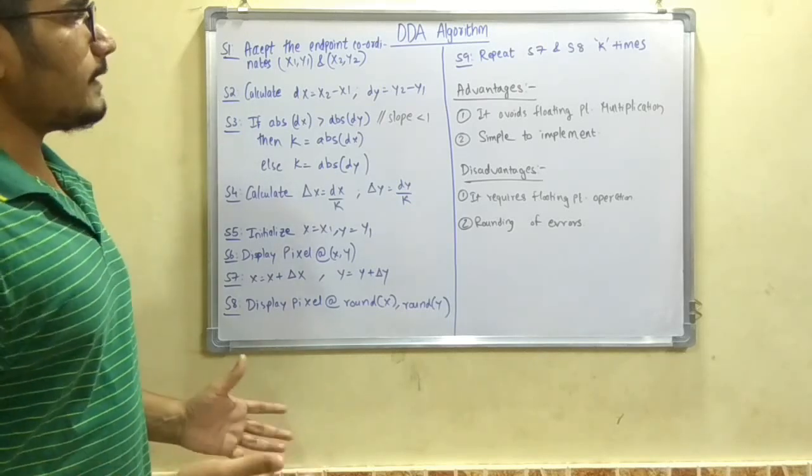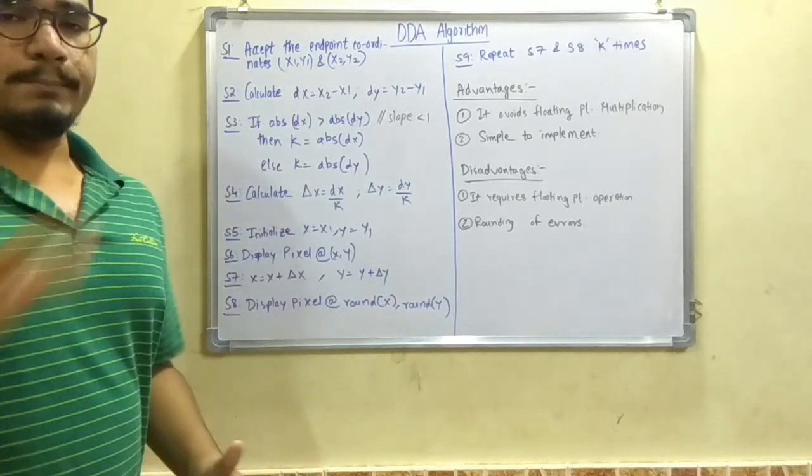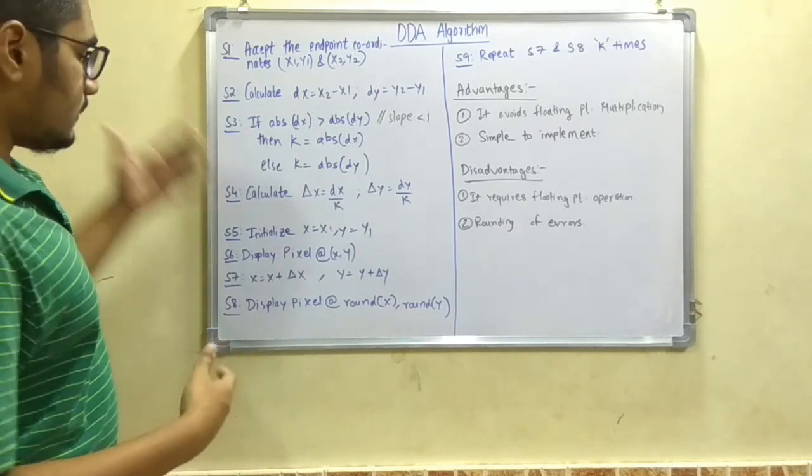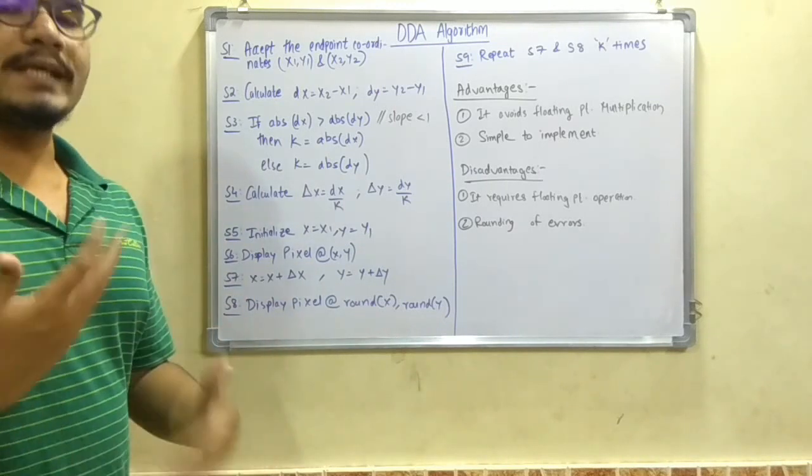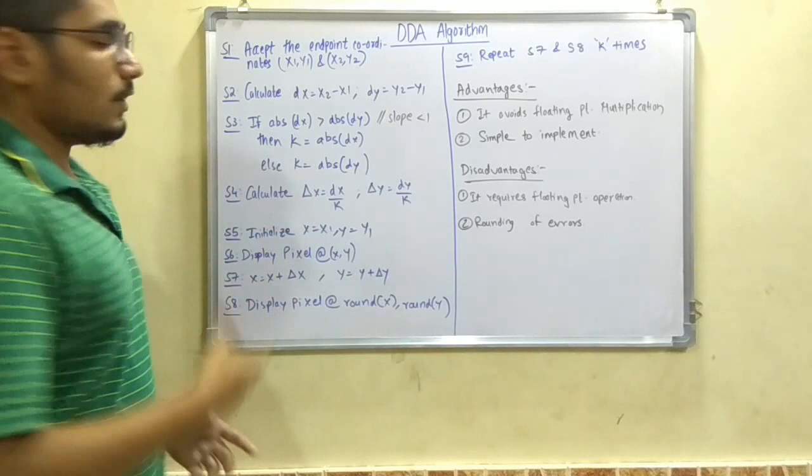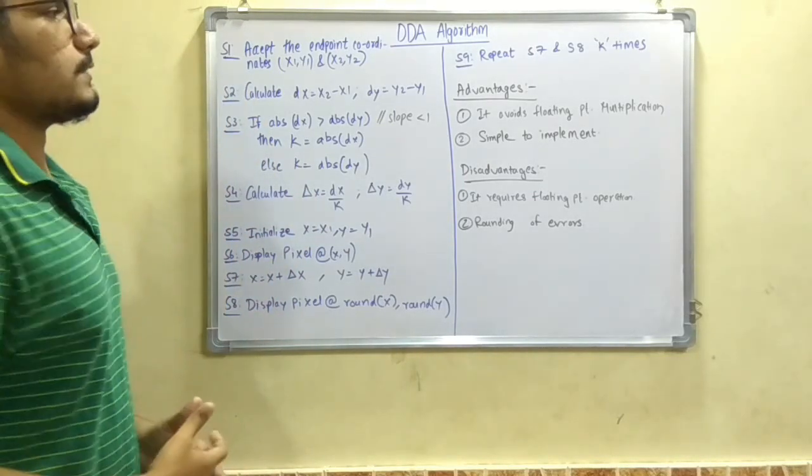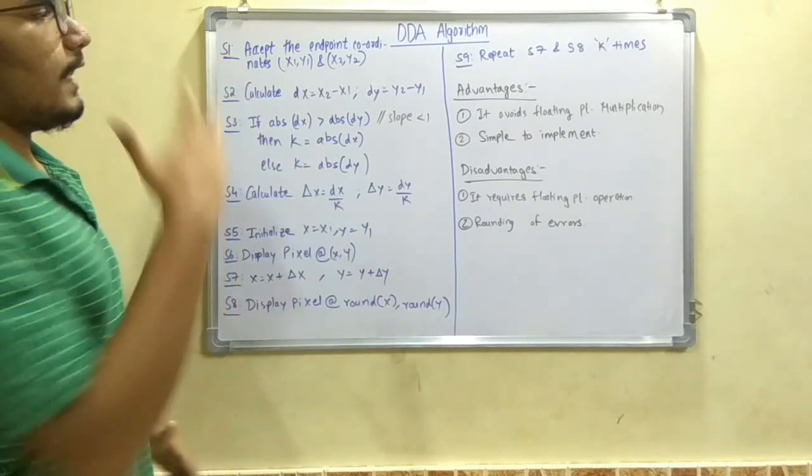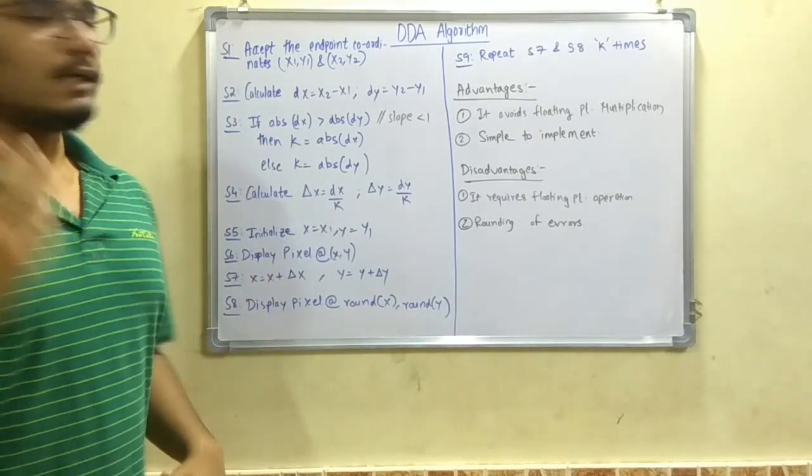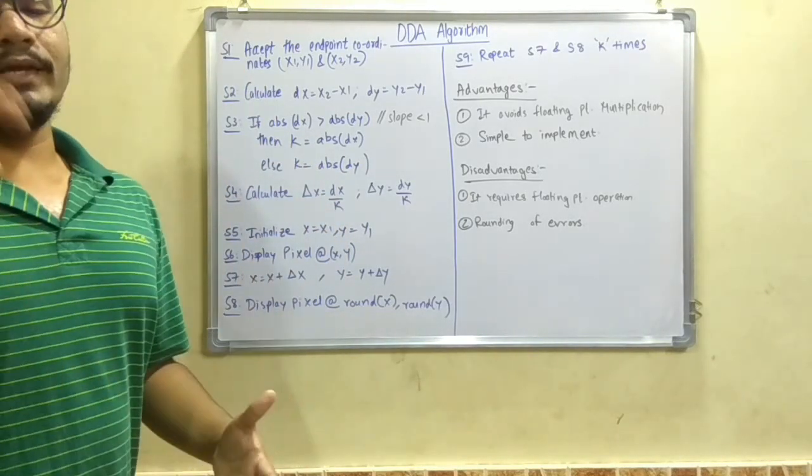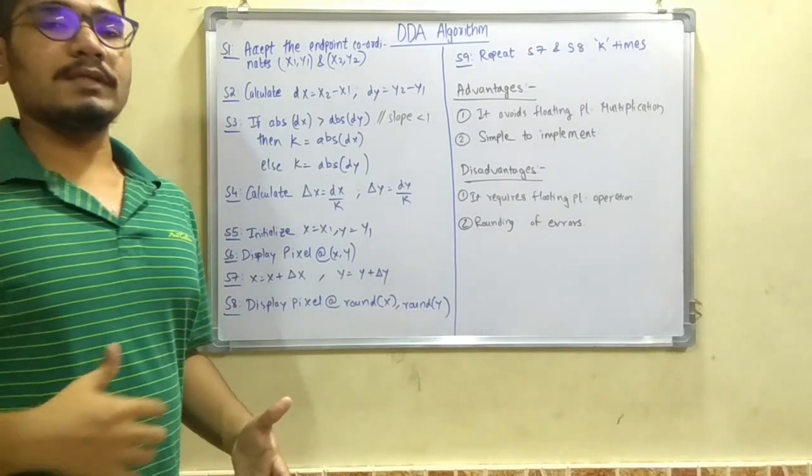So after we do step 8, then we move on to step 9, and step 9 is to repeat this step 7 and step 8, K number of times depending upon what your K is. If K is 3, K is 5, then you have to repeat it that many times. So this is the algorithm, and now we move on to the advantages and disadvantages which we haven't covered in our previous sections.